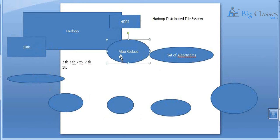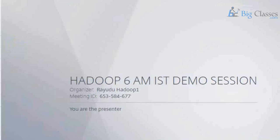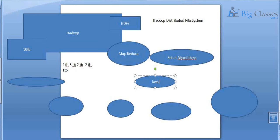We store data for the purpose of processing it. MapReduce contains the set of algorithms that dictate how this distributed data has to be processed in parallel. MapReduce is essentially a set of Java libraries. That is why people say that if you want to get into Hadoop development, Java is mandatory.